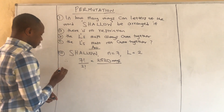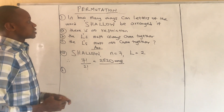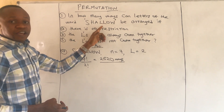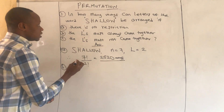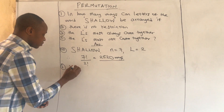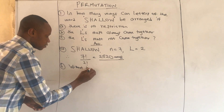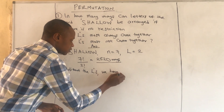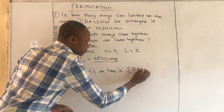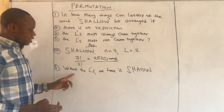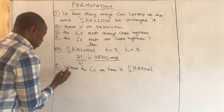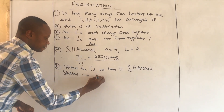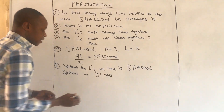The second part is interesting: in how many ways can the same letters of the word 'shallow' be arranged if the L's are together in any arrangement? The condition is attached to the L's. We approach the question this way — without the L's, the remaining letters S, H, A, O, W can be arranged in five factorial ways.